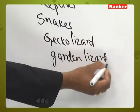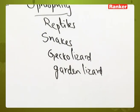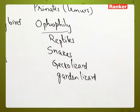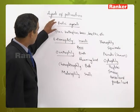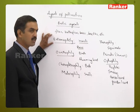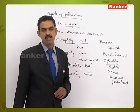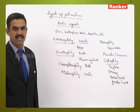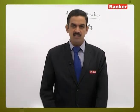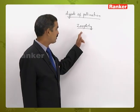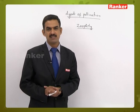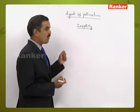All these agents — snakes, lizards — come under ophiophily. Any animal helping in pollen transfer is referred to as zoophily, so all biotic agents studied so far are part of zoophily. Out of all biotic agents, entomophily is most frequent, with bees being the most common cross-pollinating insects.